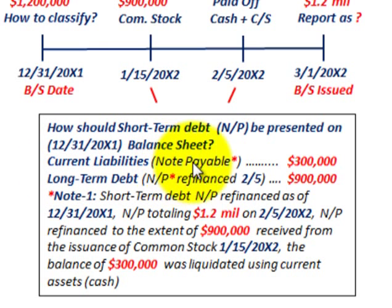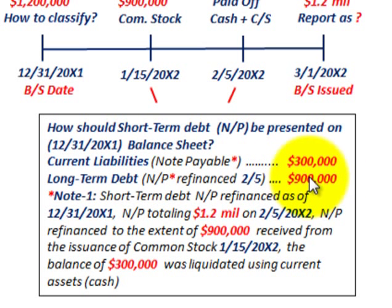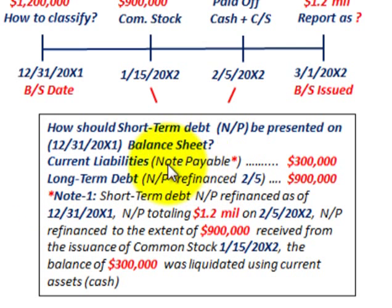Here's how we break it up on the balance sheet. Under current liabilities, notes payable is listed for $300,000 — representing the portion paid off with cash, which remains a current liability. Under long-term debt, we classify $900,000. We reclassify $900,000 of the $1.2 million current liability as long-term debt because it was refinanced with the equity issuance before the reporting date. A note reference is added to the balance sheet.